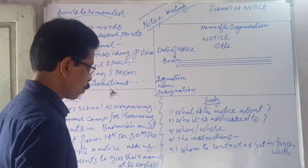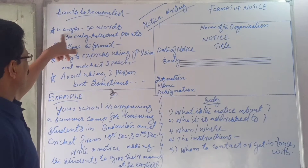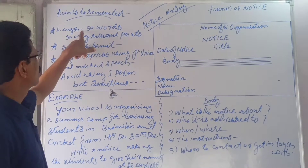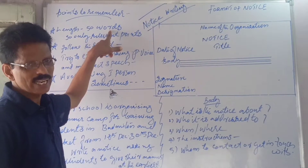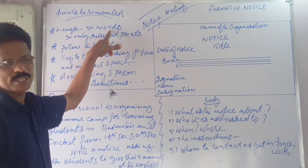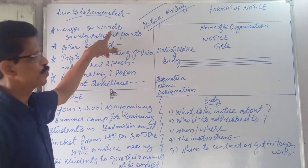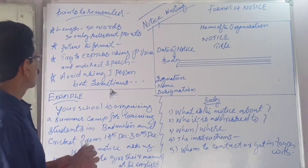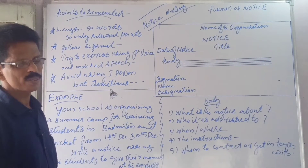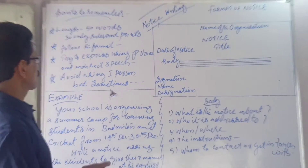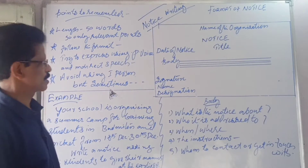Number one, points to remember. Number one: the length of the notice should be 50 words. You are not supposed to write long essays or long sentences. Try to limit within the stipulated length, that is 50 words. Then, only relevant points are to be mentioned. You don't mention all the details or long sentences — relevant points only.